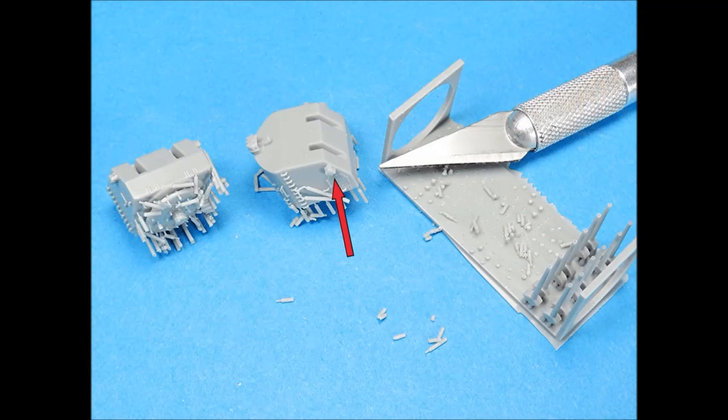These Black Cat models 5 inch 38 turrets have a level of detail that just cannot be achieved with the addition of photo etched parts to a kit supplied turret. There is even a minute space between the turret sides and the ladder rungs. Here again these turrets were used on my Tamiya USS Missouri build.